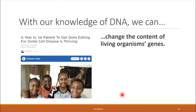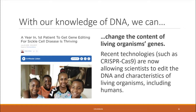Even now today, our understanding of DNA is enabling new technologies that allow us to actually change the content of some living organisms' genes by genetically engineering them, and this is even happening in humans. A news headline reads: 'A year in, the first patient to get gene editing for sickle cell disease is thriving.' This lady had her red blood cells genetically engineered to correct the mutation which causes the disease and then placed back into her body, and it appears to be working really, really well. This is just one example that would not be possible unless we understood the structure and function of DNA.